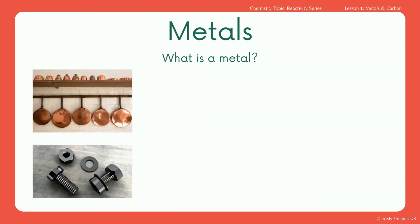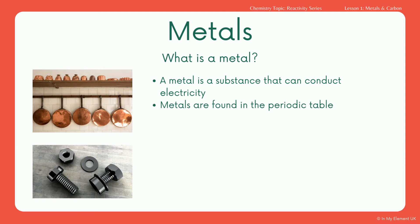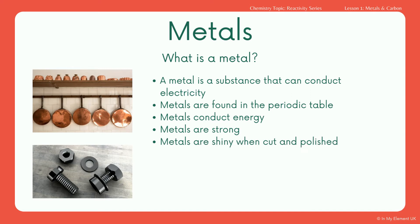Here you've got copper pans and pots and also iron nuts and bolts. A metal is a substance that can conduct electricity - it will be a good conductor and will also conduct heat. Metals are found in the periodic table; the majority are found on the left-hand side - Group 1 and Group 2 - and there are also transition metals in the middle block. The majority of metals are very strong and they are shiny when cut and polished, as we saw from the sodium and the copper pots and nuts and bolts.